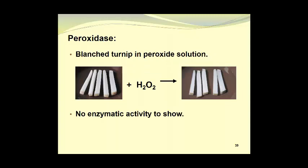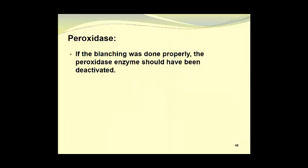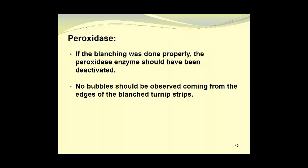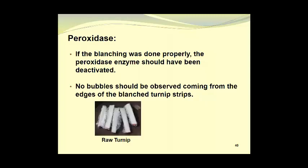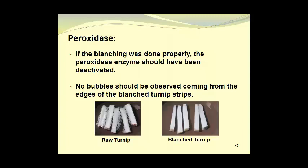When hydrogen peroxide was poured over the blanch turnip, the material simply stayed there and there were no oxygen bubbles liberated, so there was no enzymatic activity to show. If the blanching was done properly, the peroxidase enzyme should have been deactivated, which it was, and no bubbles should be observed coming from the edges of the blanched turnip strips. So here we see what happens with the raw turnip and you can see that there is a considerable amount of bubbling happening around the raw turnip pieces. However, with the blanched turnip, there are no such bubbles.